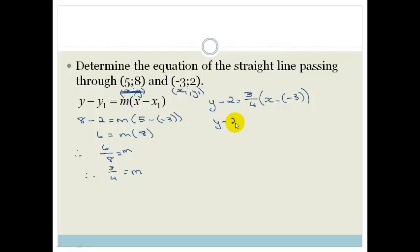So there we've got y minus 2 is equal to 3 quarters x plus 3, so we've got y minus 2 is equal to 3 over 4x plus 3 times 3 is 9 over 4. So this becomes y is equal to 3 over 4x plus 9 divided by 4 is actually 2 and a quarter and we're just going to add the 2 over here as well.